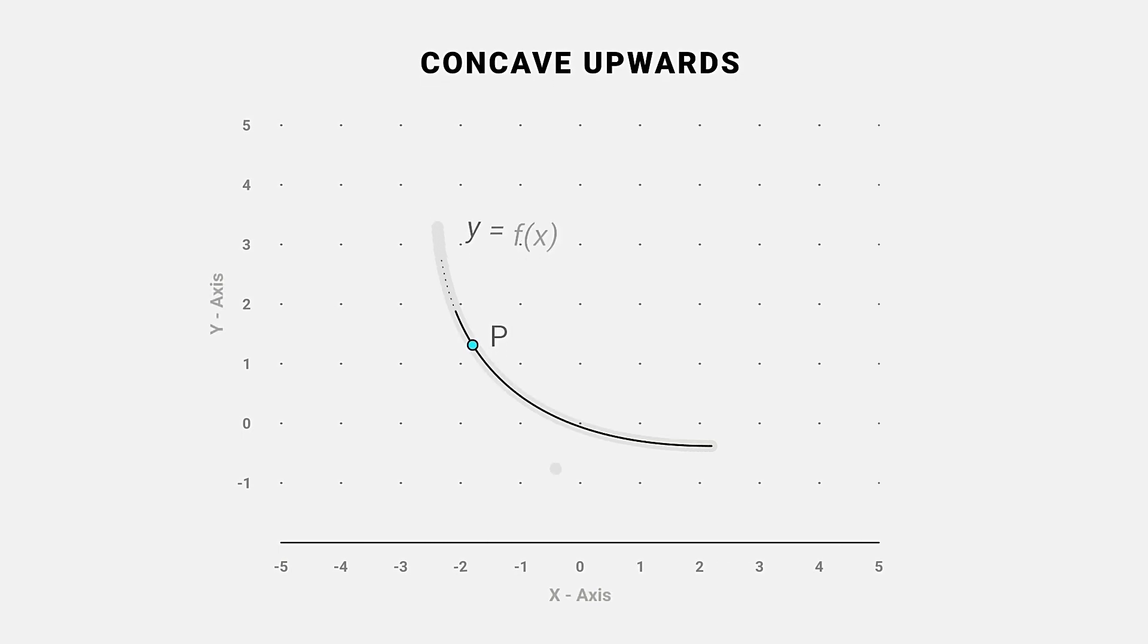If the curve is above the tangent at p, it is said to be concave upward or convex downward. Mathematically, slope increases as x increases.